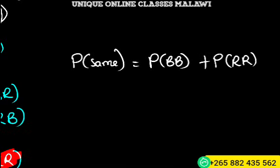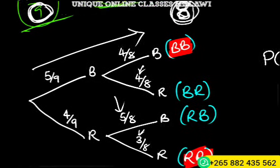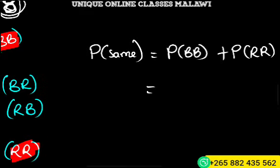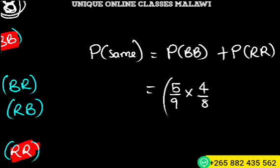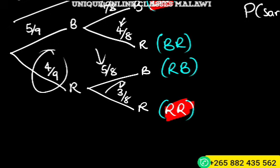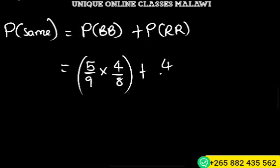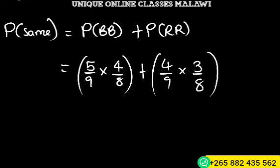P(BB) means we follow this line, so we're going to have 5 over 9 times 4 over 8. Plus P(RR) - let's see this one: 4 over 9 times 3 over 8.